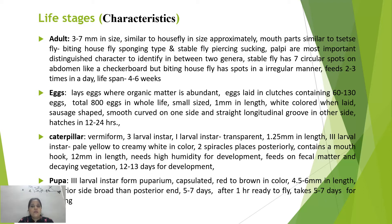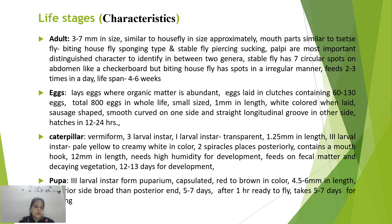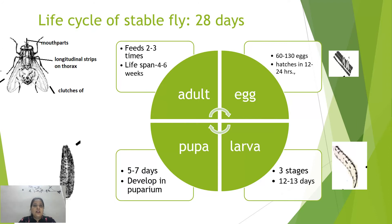There are three larval instars with two molts. The first instar larva is transparent, 1 to 1.25 mm in length. The third instar larva is pale yellow to creamy white, 12 mm in length, with two posteriorly placed spiracles and a mouth hook. Larvae require high humidity, feed on fecal matter and decaying vegetation, and take about 12 to 13 days to develop. The third instar forms a puparium that is red-brown, 6 mm in length, broader anteriorly. Pupation takes five to seven days, then an adult emerges and is ready to fly within one hour, with mating occurring after five to seven days.